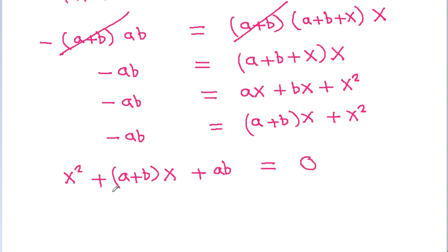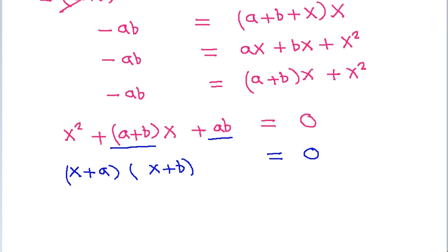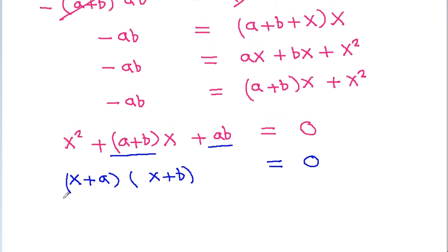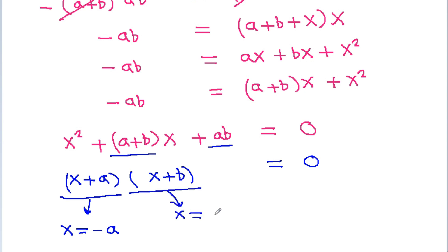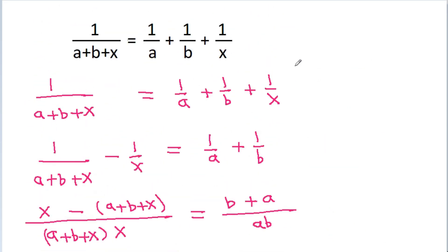Since a plus b is the sum of a and b and ab is the product, the factors are x plus a and x plus b equals 0. So from x plus a equals 0 we get x equals minus a, and from x plus b equals 0 we get x equals minus b. Therefore x equals minus a and minus b.